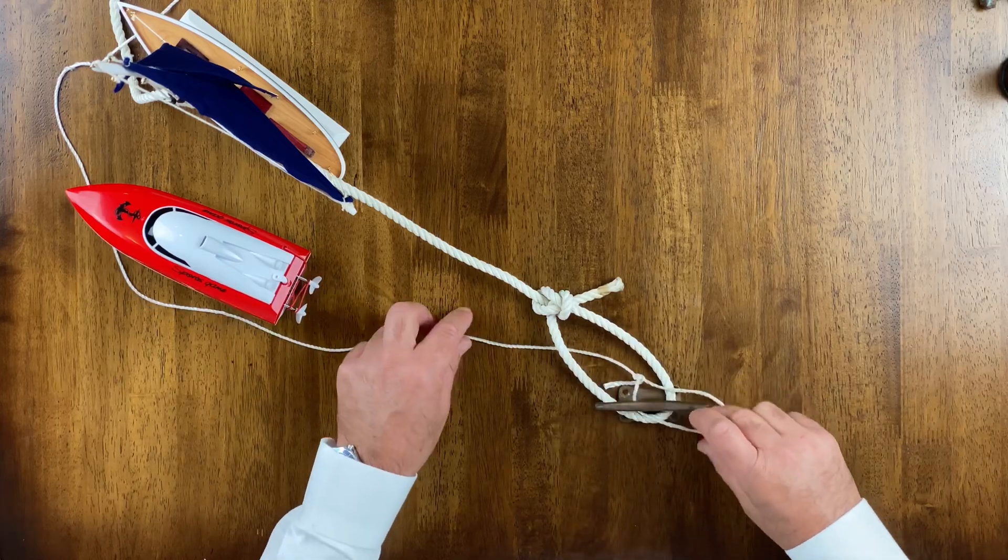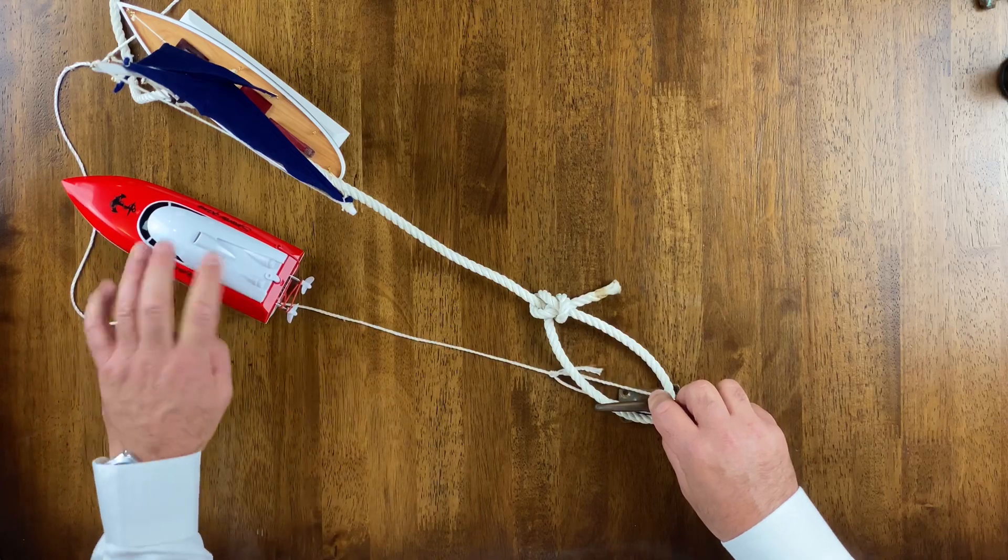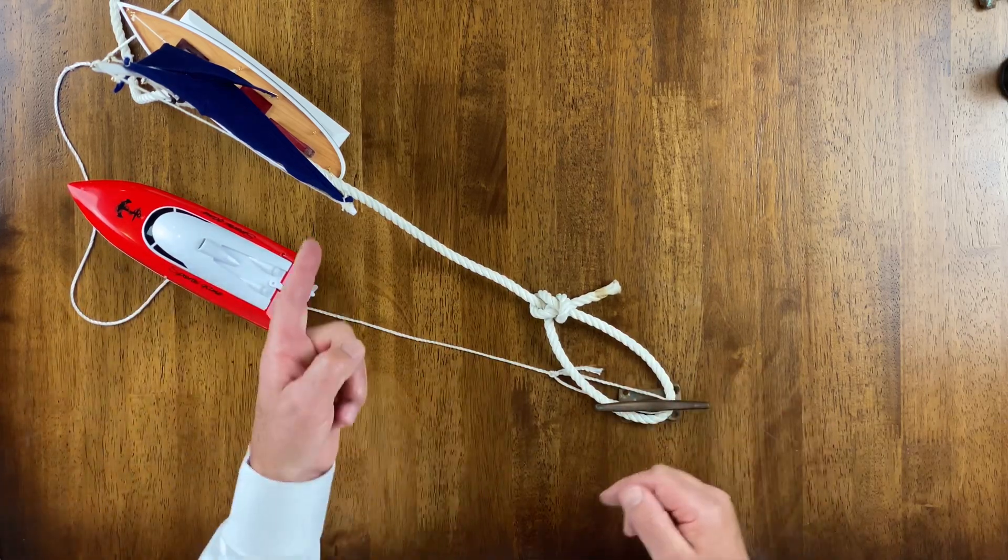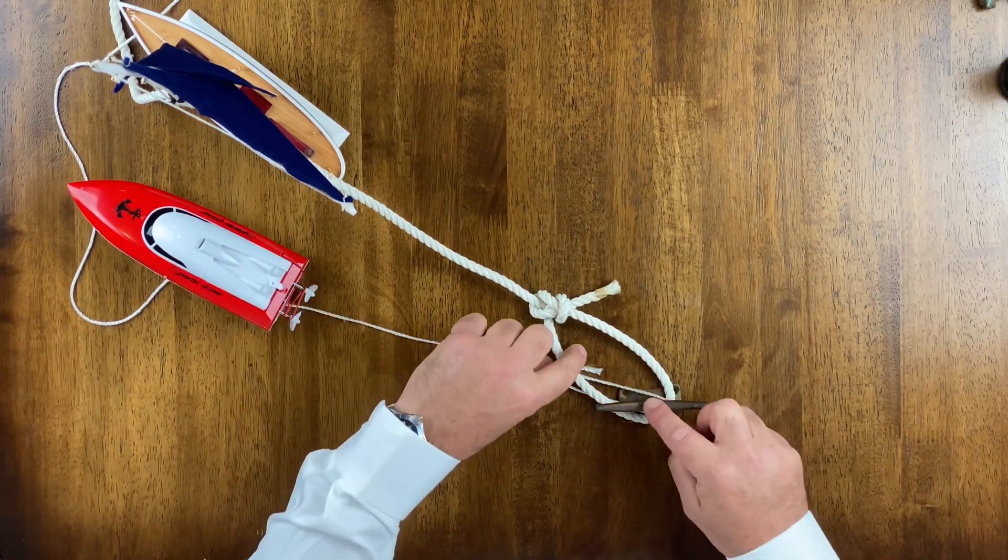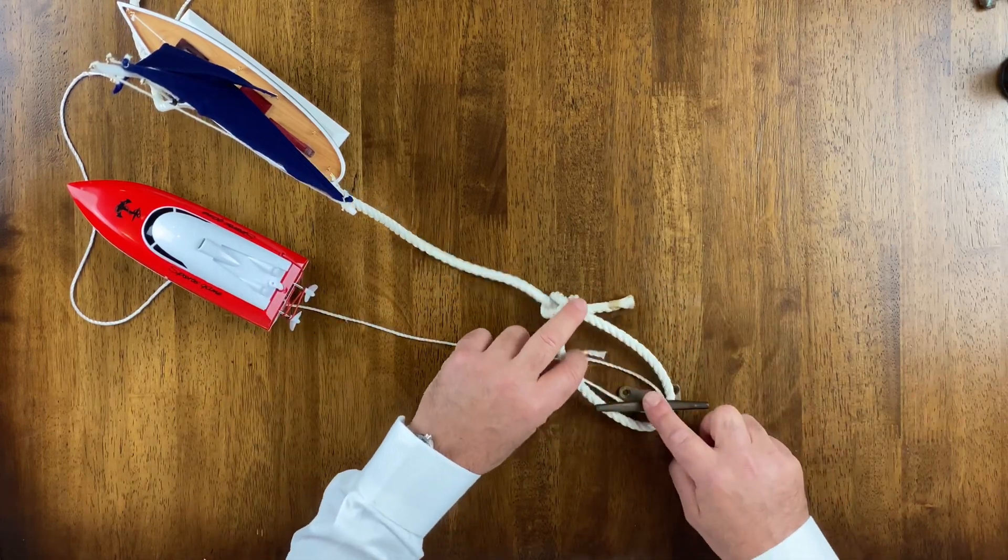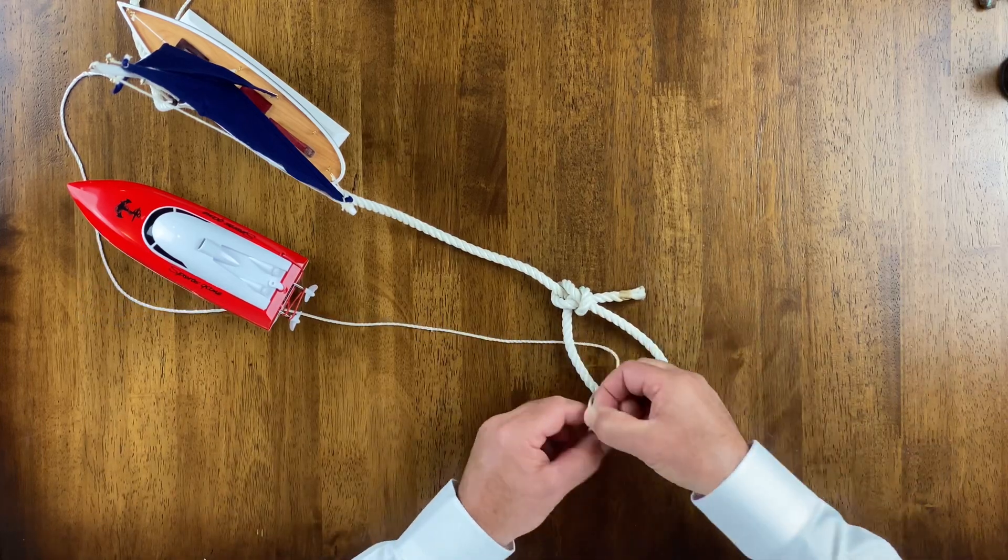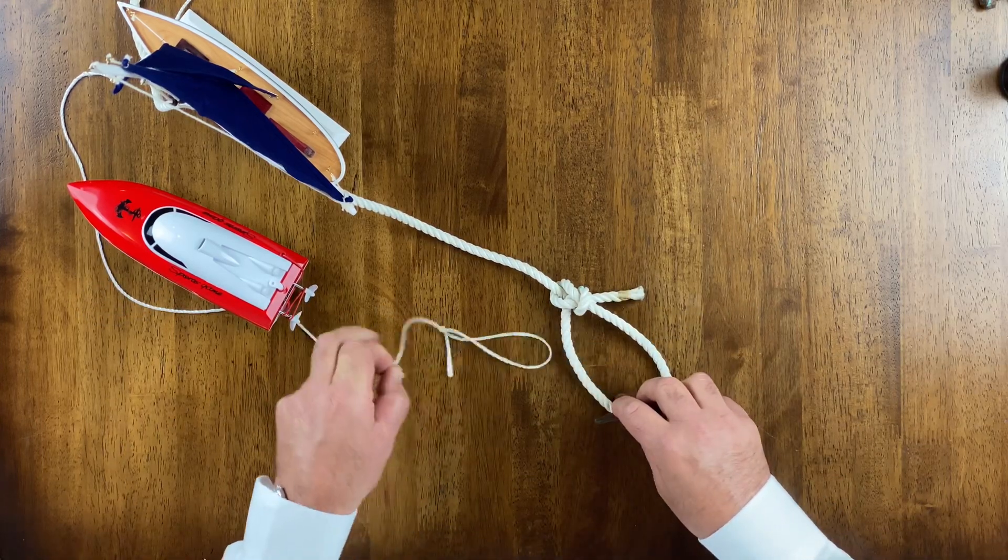He pulls tight and is now docked. Watch what happens if this guy wants to leave - he can take his line off and leave. If you want to leave, you can take your line off and leave. So that is dipping the eye.